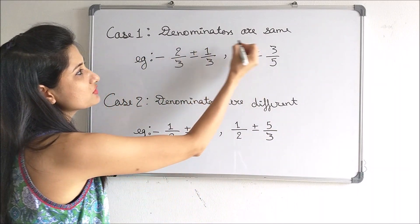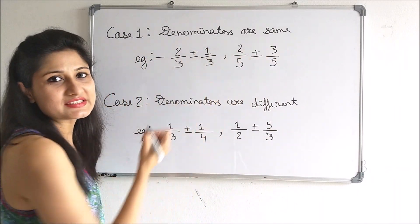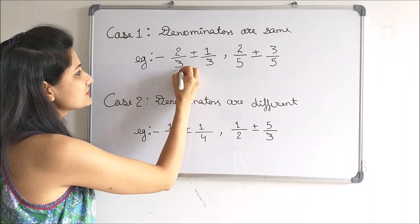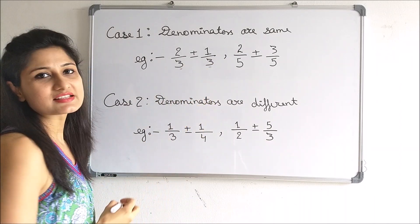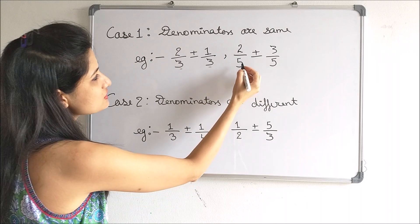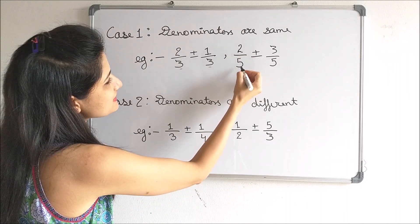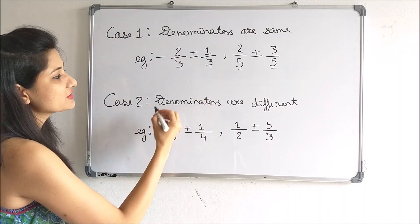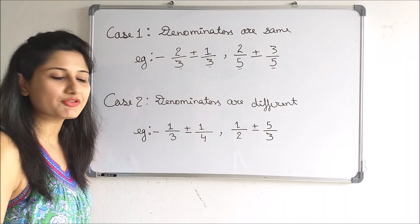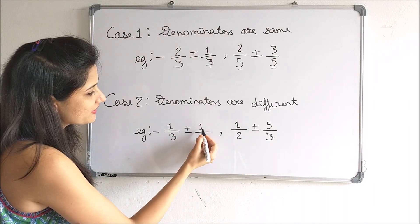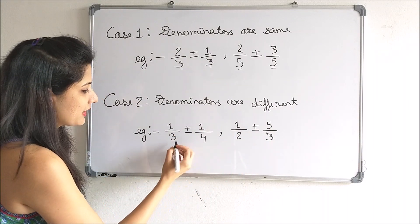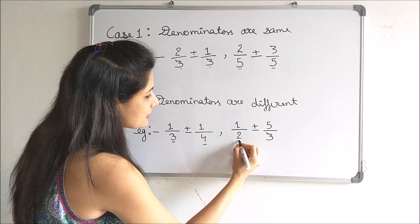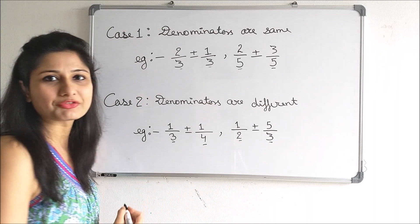Either the denominators of both the fractions would be same. For example, 2 by 3 and 1 by 3 — here the denominators are both 3. Here also, the denominators are both 5. Or, the denominators of both the fractions would be different. For example, 1 by 3 and 1 by 4 — here the denominators are different. Here also, the denominators of both fractions are different.